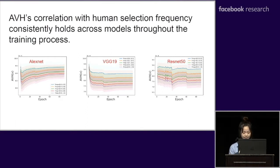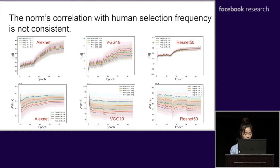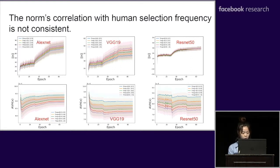Diving deeper, we split the test set into five levels of human visual hardness. The blue lines correspond to the hardest examples for humans and the purple lines to the easiest. The AVH gaps between different human selection frequencies are very consistent across all models throughout the entire training process, further corroborating that AVH is a more generalizable proxy for human visual hardness. In contrast, the norm's correlation with human selection frequency is not consistent — in ResNet-50, the norms of samples with different human selection frequencies converge to the same value by the end of training, so it cannot serve as a human visual hardness indicator.